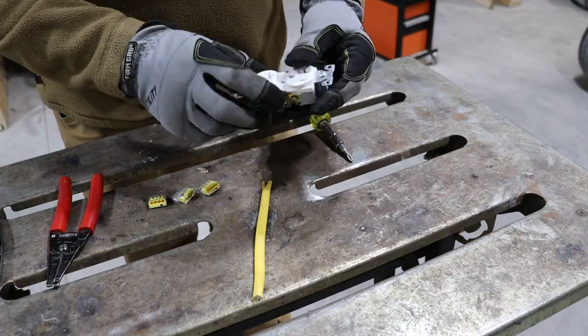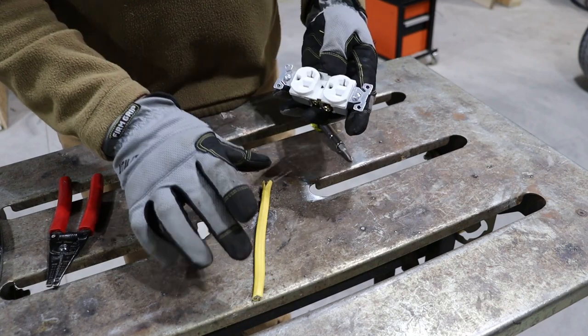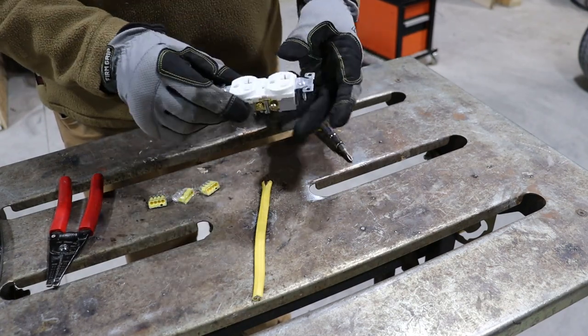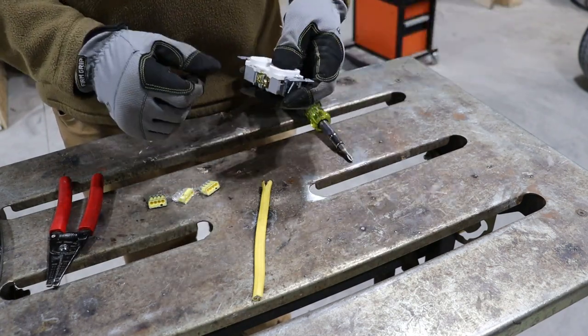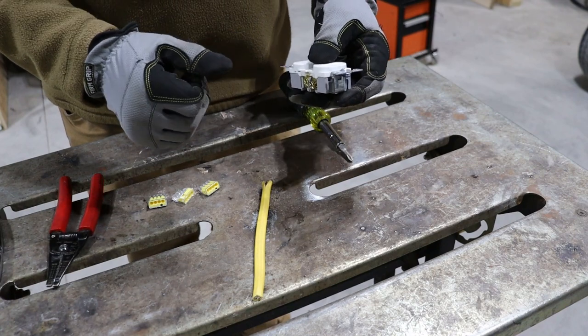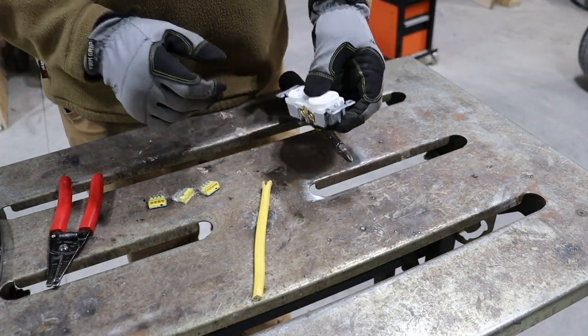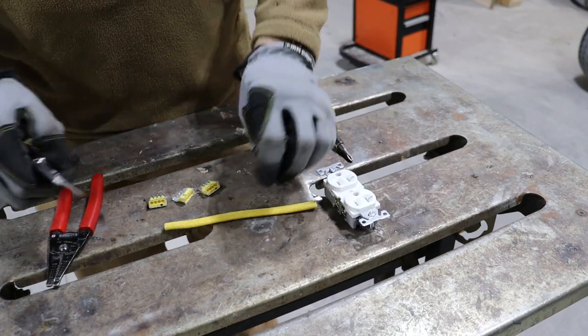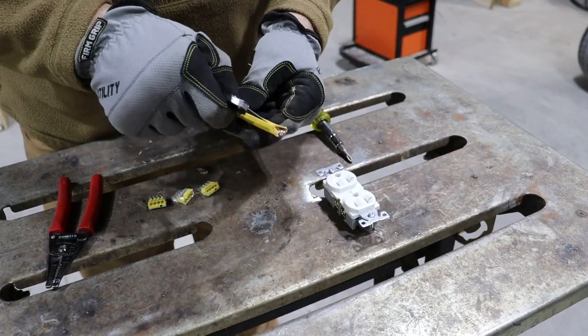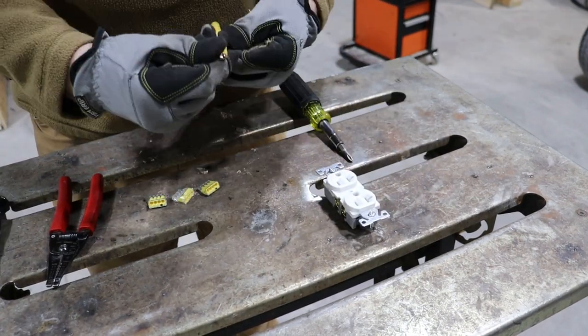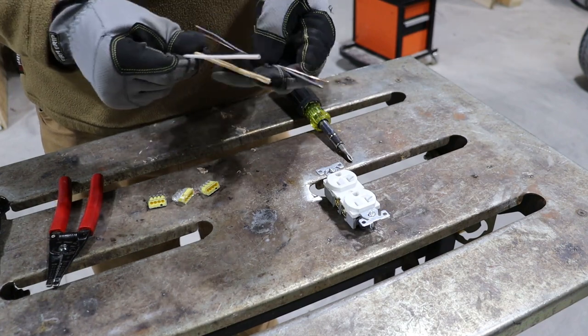I'm going to start by prepping my outlet. Usually I'll take these pieces of wire, connect them up, take a bunch of these around with me. Then when I go terminate them in the box, I'll just plug everything together and move on. Just like always, carefully get the jacket off from the Romex.